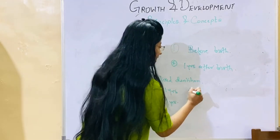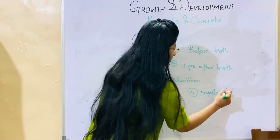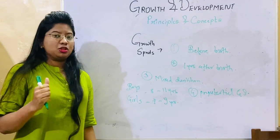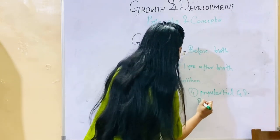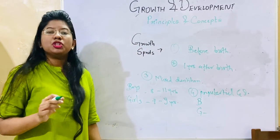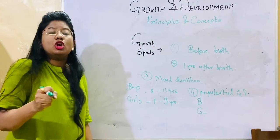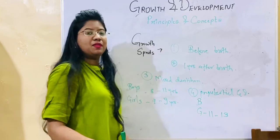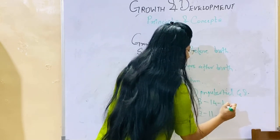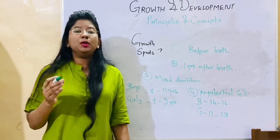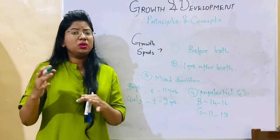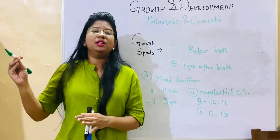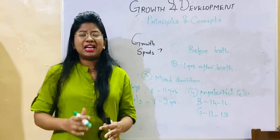Then there is the pre-pubertal growth spurt, which occurs when children are attaining puberty. Girls are the first to attain this growth spurt, at the age of 11 to 13 years. For boys it occurs at 14 to 16 years. So growth spurts occur: before birth, one year after birth, during the mixed dentition period, and during the pre-pubertal phase. This is a very important topic for MCQs as well as SEQs.